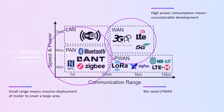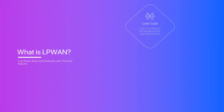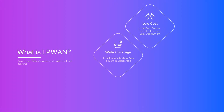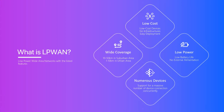What are the features of LPWAN? It firstly needs to be of low cost for small devices and massive deployment. Then it should be widely covered around rural areas without deploying too many base stations. It also should be battery friendly. And lastly, with millions or billions of devices, the network is still robust enough.